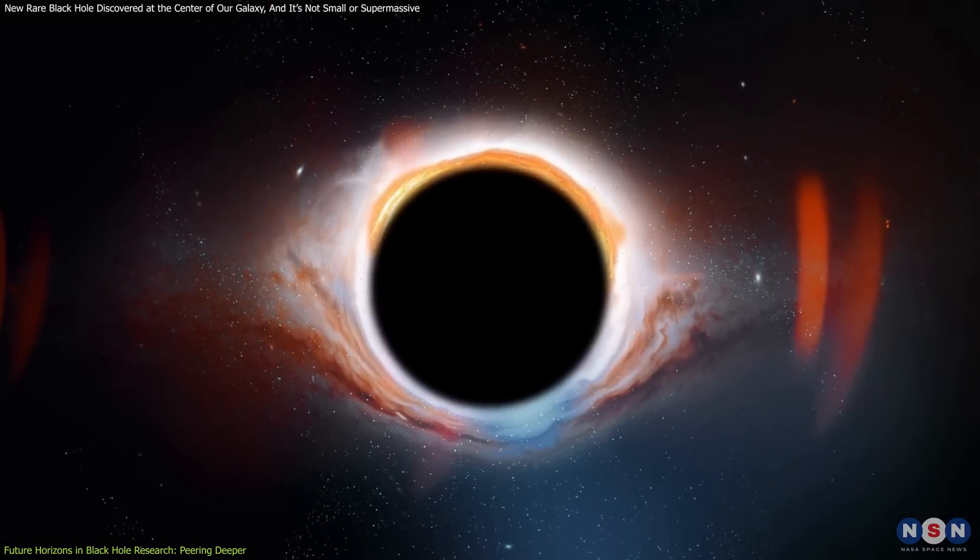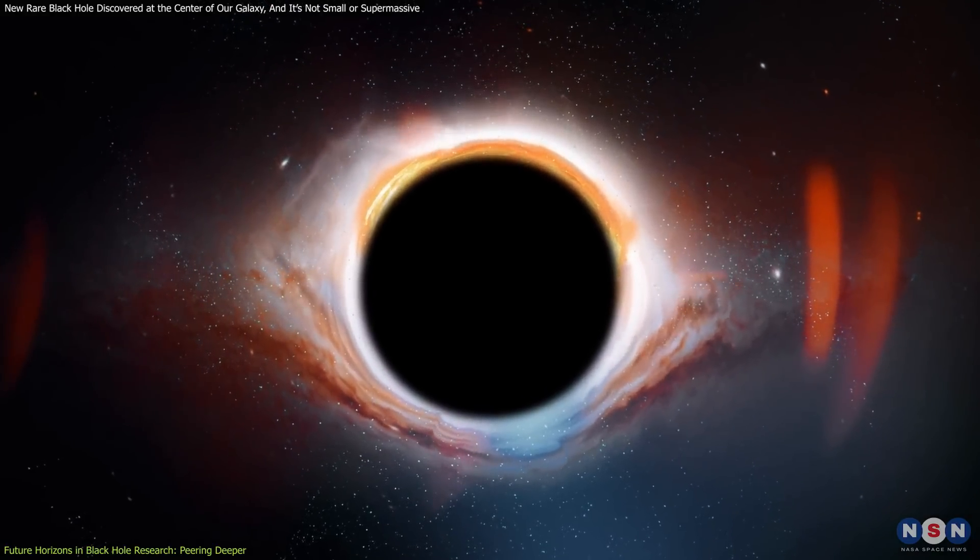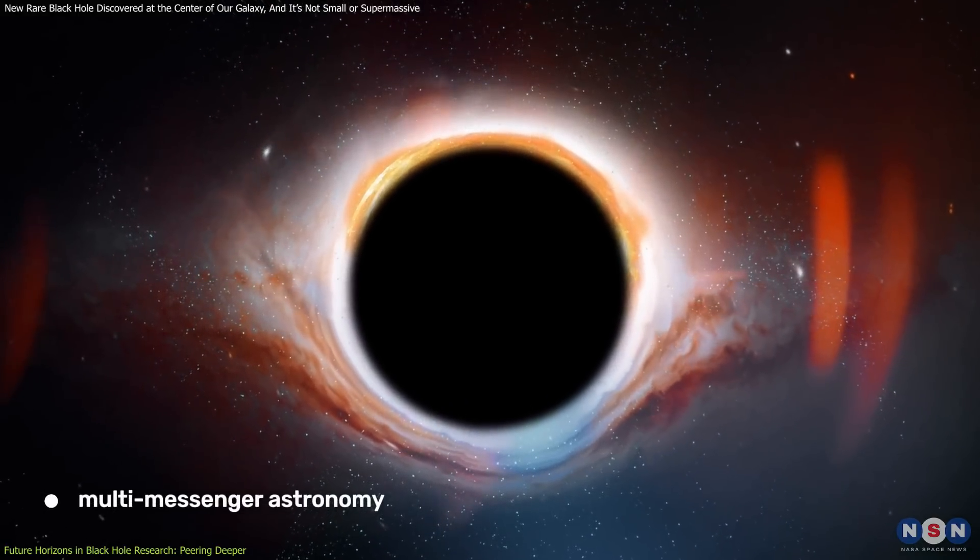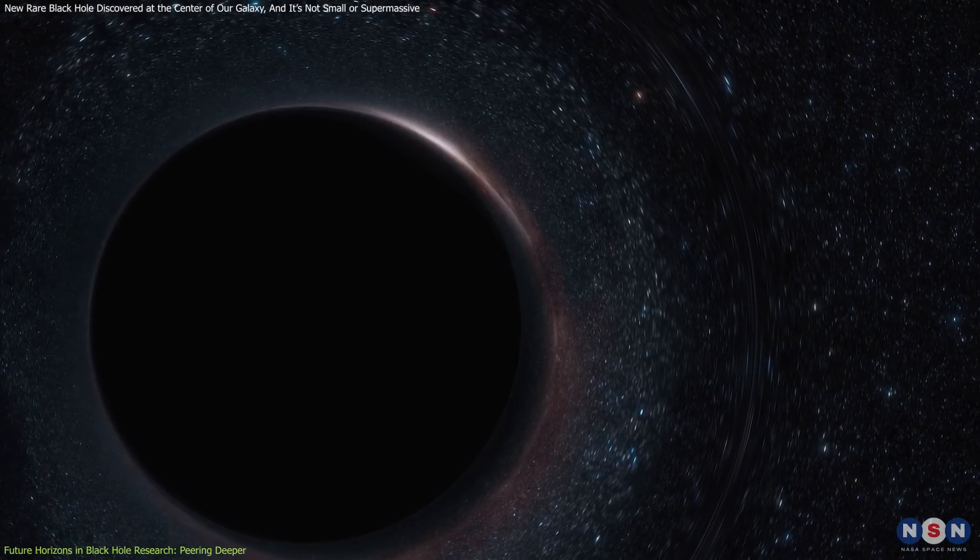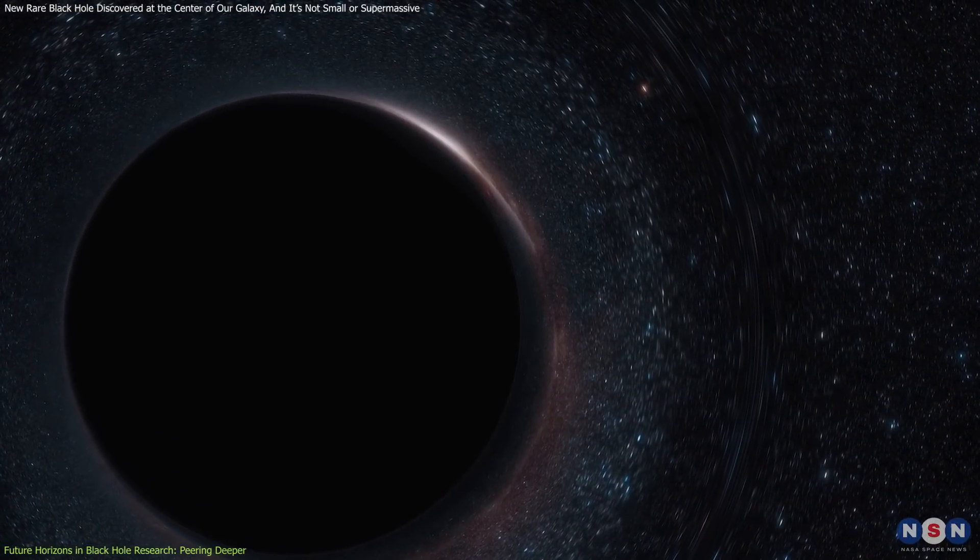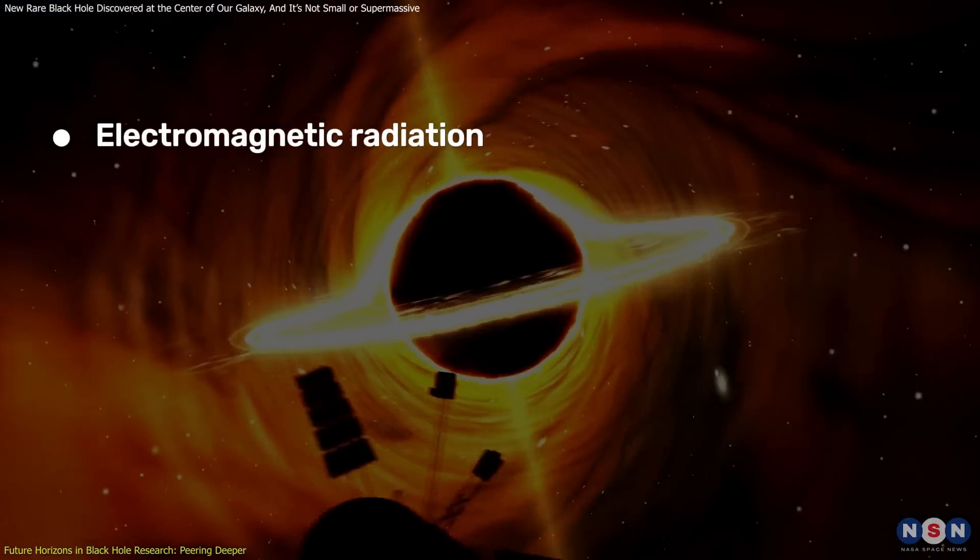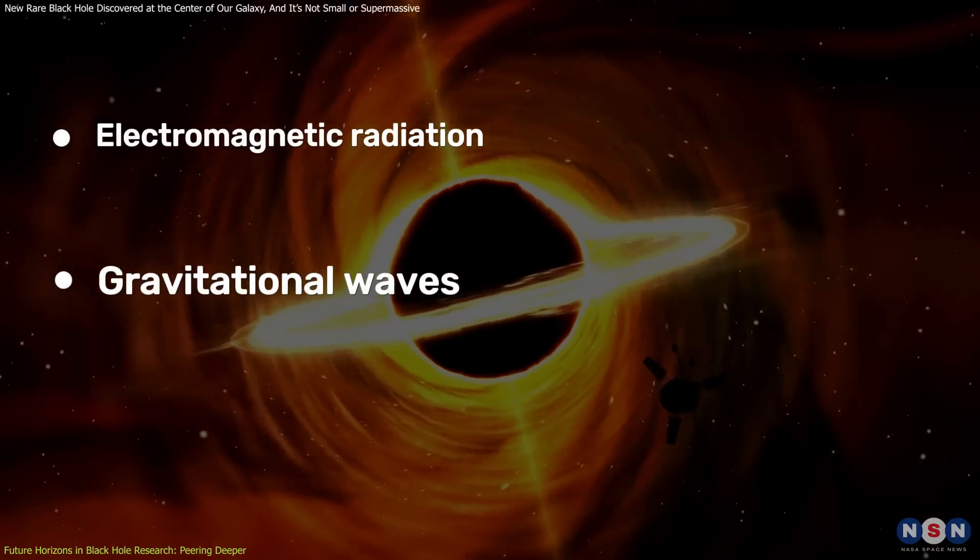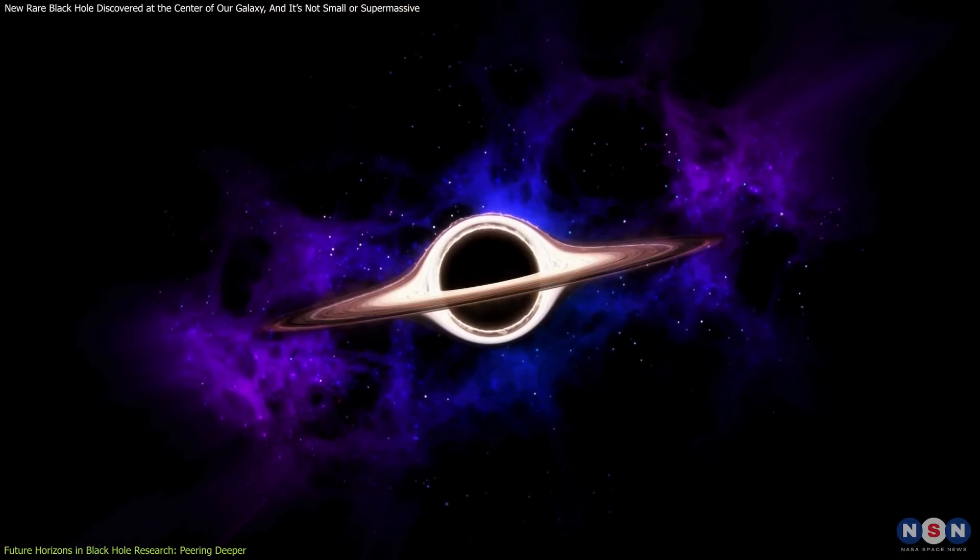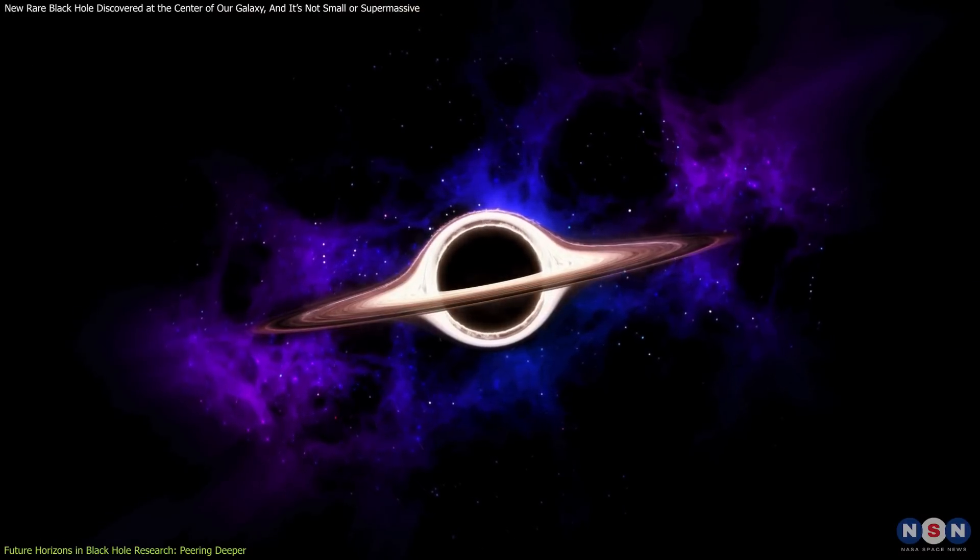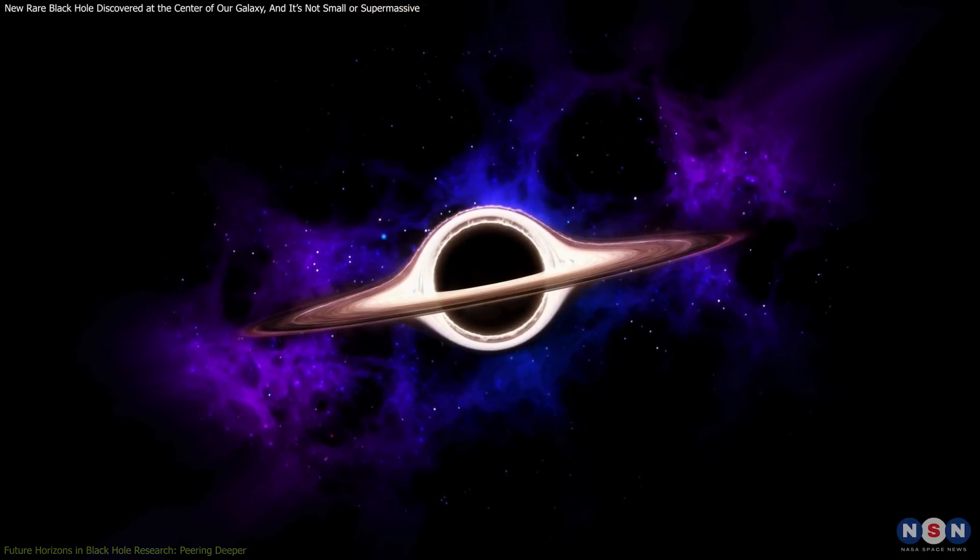As we continue to observe black holes through traditional means, there is also a growing emphasis on multi-messenger astronomy, which involves studying astronomical phenomena through different carriers of information such as electromagnetic radiation, gravitational waves, and neutrinos. This approach could revolutionize our understanding of black holes by providing new insights into their properties and behaviors.